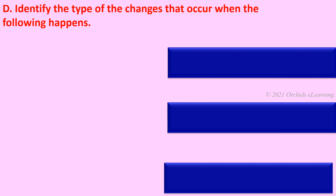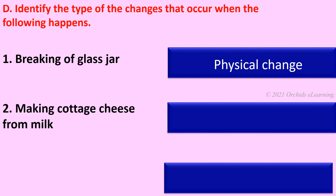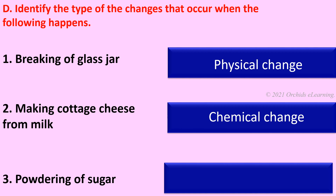Identify the type of changes that occur when the following happens. Breaking of a glass jar — physical change. Making cottage cheese from milk — chemical change. Powdering of sugar — physical change.